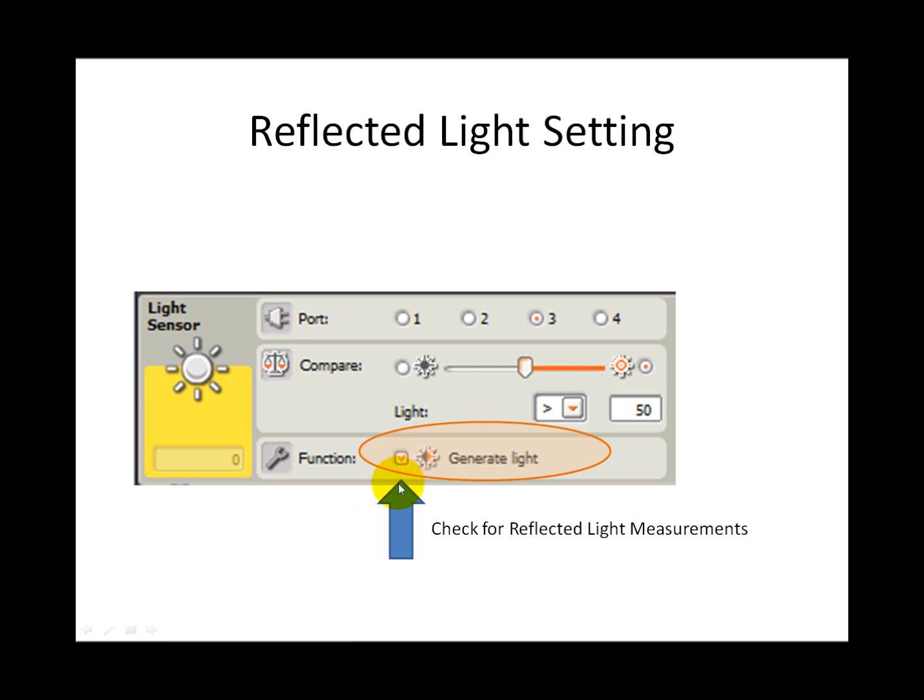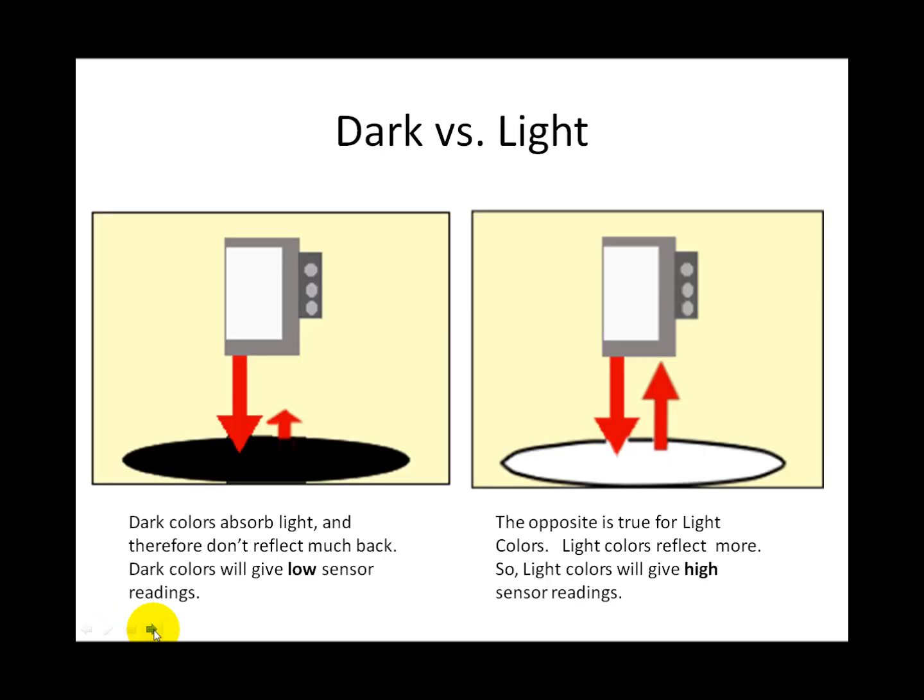For sensing lines on a mat, like in First Lego League, you will usually be measuring reflected light and not ambient light. Dark colors absorb light so they don't reflect as much back to the light sensor. This means that dark colors will have low readings.